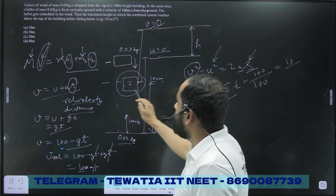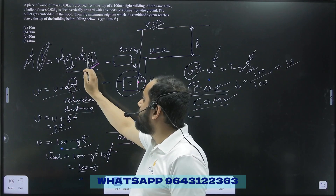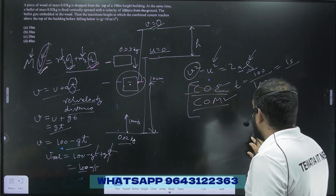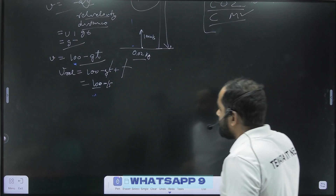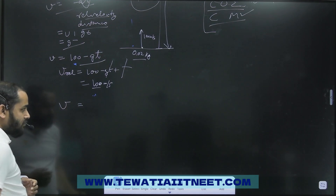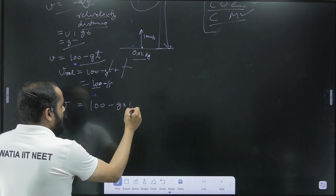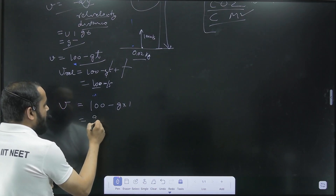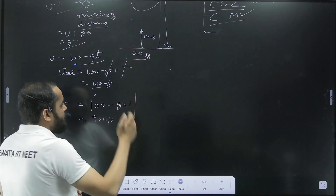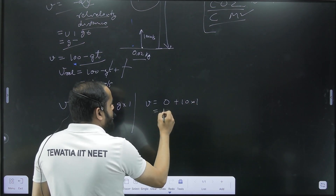Now we need to find the velocities just before the collision so we can apply the momentum conservation equation. The velocity of the bullet after 1 second is 100 minus g × t = 100 − 10 × 1 = 90 m/s. Similarly, for the block dropped from the top, v = 0 + 10 × 1 = 10 m/s downward.